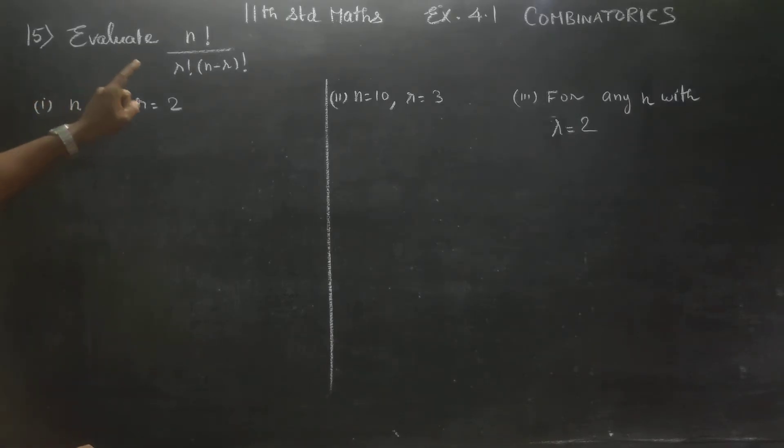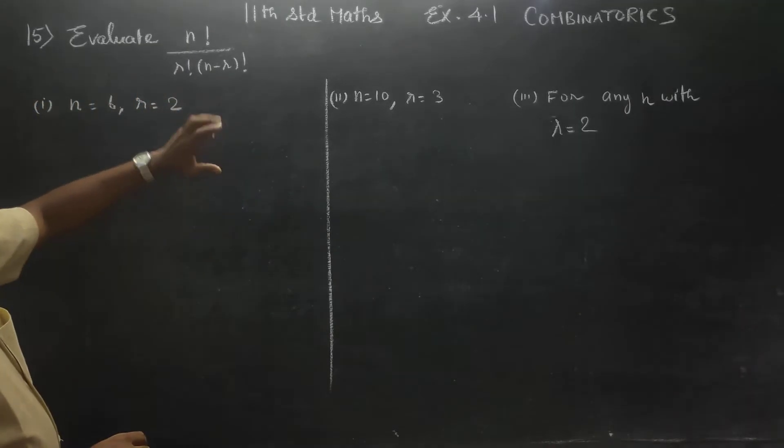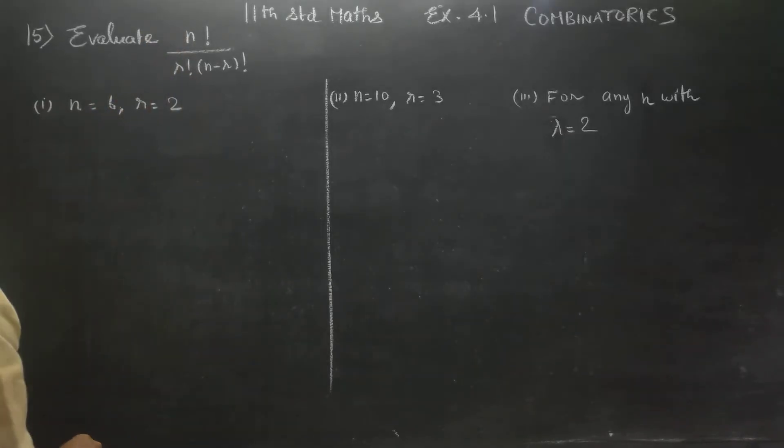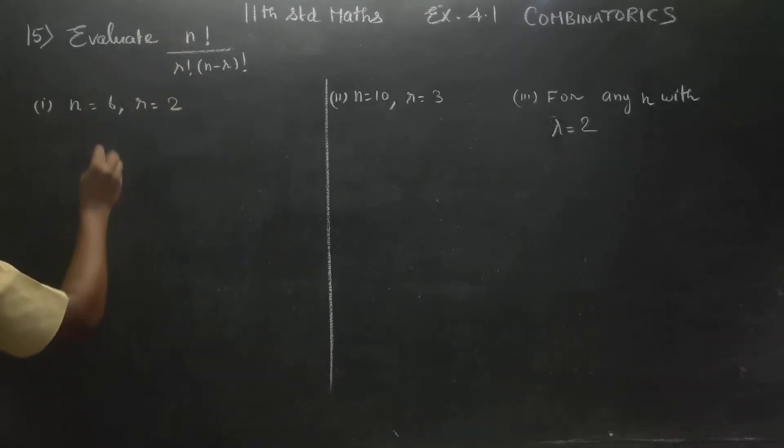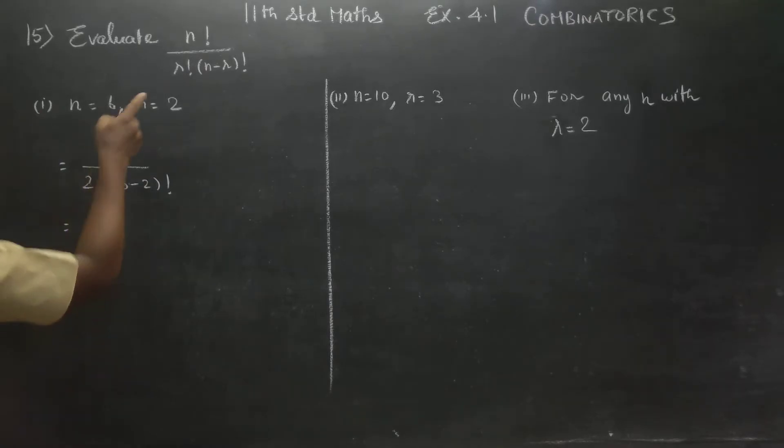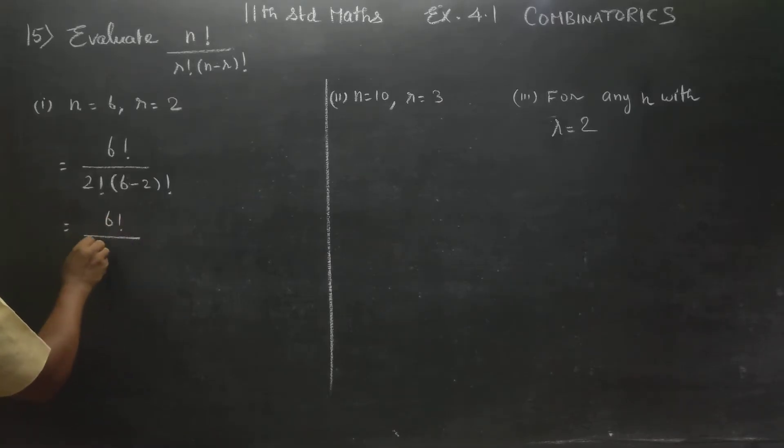Evaluate n factorial by r factorial into n minus r factorial. In the formula we will evaluate, substitute n and r. Just substitute here. 6 factorial by r factorial is 2 factorial into n minus r. n minus r is 6 minus 2 factorial. Just you have to substitute here. 6 factorial by 2 factorial, 6 minus 2 is 4 factorial.